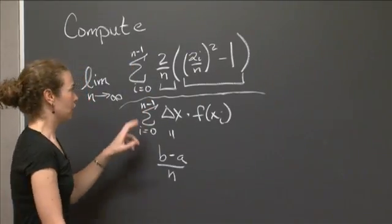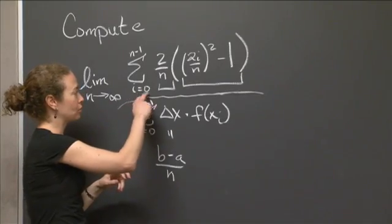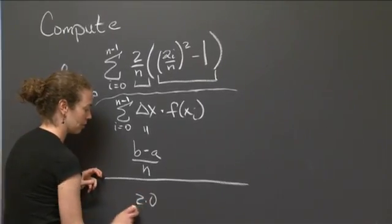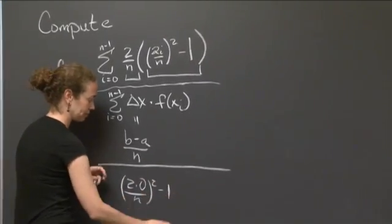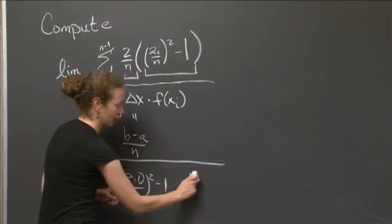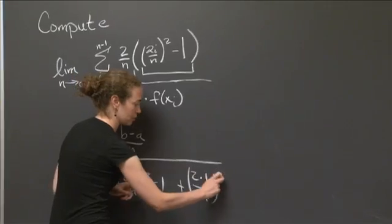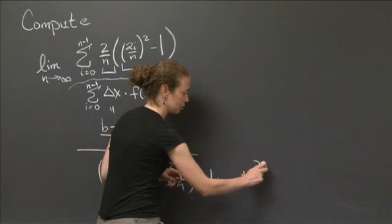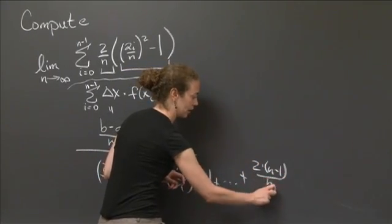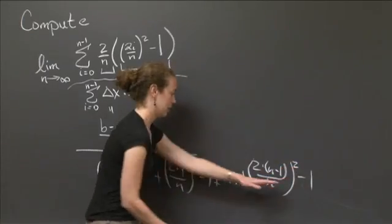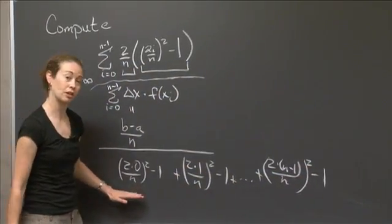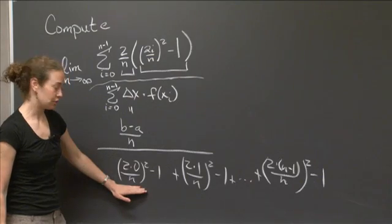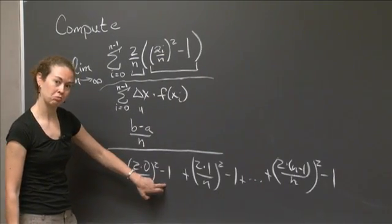So what do I have? Well, when I put in i equals 0, let's put down some of these values. When I put in i equals 0, I get 2 times 0 over n squared minus 1. And when I put in i equals 1, I get 2 times 1 over n squared minus 1. And I go all the way up to 2 times (n minus 1) over n squared minus 1. So it's kind of a long sum there. But this is what our sum of these things looks like if I pull out the 2 over n. So here I get 0 squared minus 1.